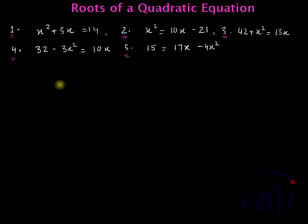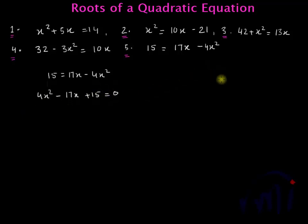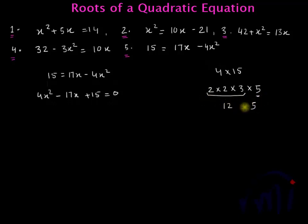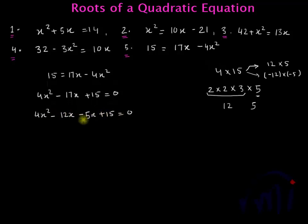The final problem is 15 equals 17x minus 4x squared. This becomes 4x squared minus 17x plus 15 equals 0. We need to find the factors of 4 multiplied by 15. The factors of 4 are 2 multiplied by 2, and the factors of 15 are 3 multiplied by 5. The product of 2, 2, and 3 is 12, and combined with 5, since 12 plus 5 equals 17, the factors are either 12 and 5, or minus 12 and minus 5.